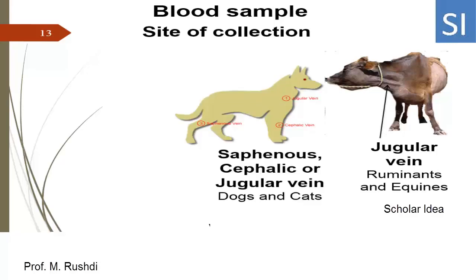In dogs and cats, blood samples are collected from the saphenous, cephalic, or jugular vein.